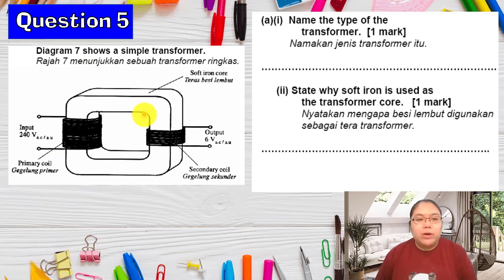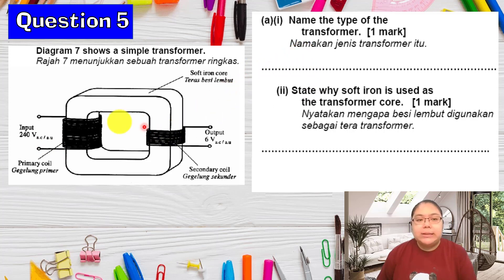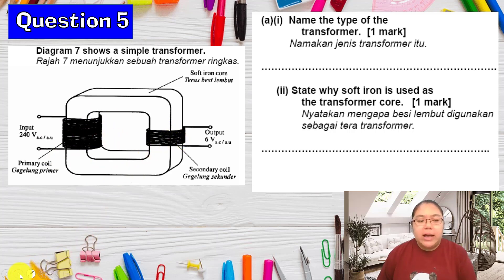This question is about a transformer. We see the wire — this one should be the input: 240 volts. This one is the output: 6 volts. For the transformer, we're using alternating current. First, they ask you to name the type of this transformer. We see that the starting number of turns is less and the final becomes more, so this situation we call it a step-down transformer.